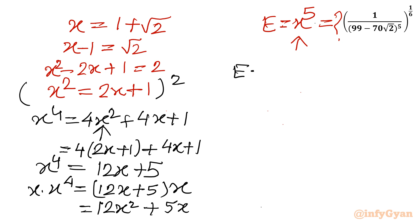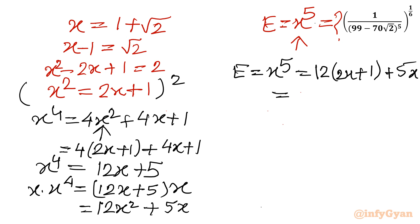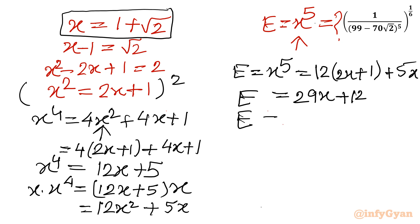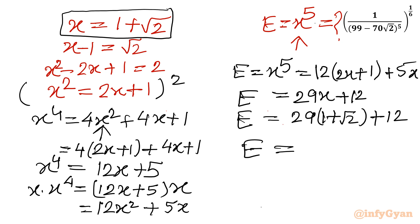So our expression E equals x⁵ equals 12x² plus 5x. Again substituting x² equals 2x plus 1: x⁵ equals 12 times (2x plus 1) plus 5x, which equals 24x plus 12 plus 5x, giving x⁵ equals 29x plus 12. Now let us put the value of x which is 1 plus √2. So E equals 29 times (1 plus √2) plus 12, which equals 29 plus 29√2 plus 12, giving our answer as 41 plus 29√2.